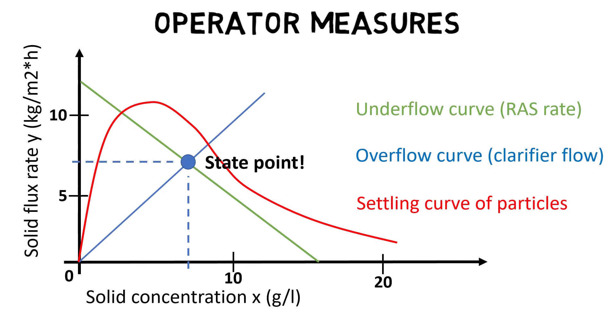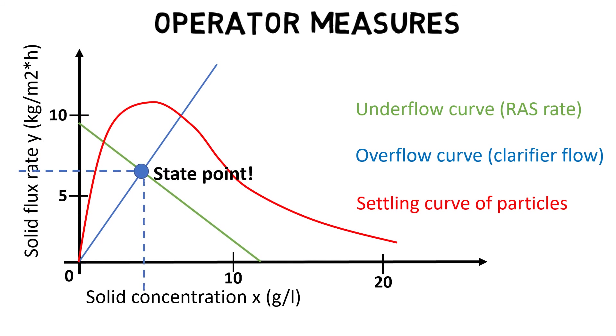Again, changing the flow rate results in a more flat or more steep overflow line. Changing the RAS rate or MLSS will move the underflow curve up or down.